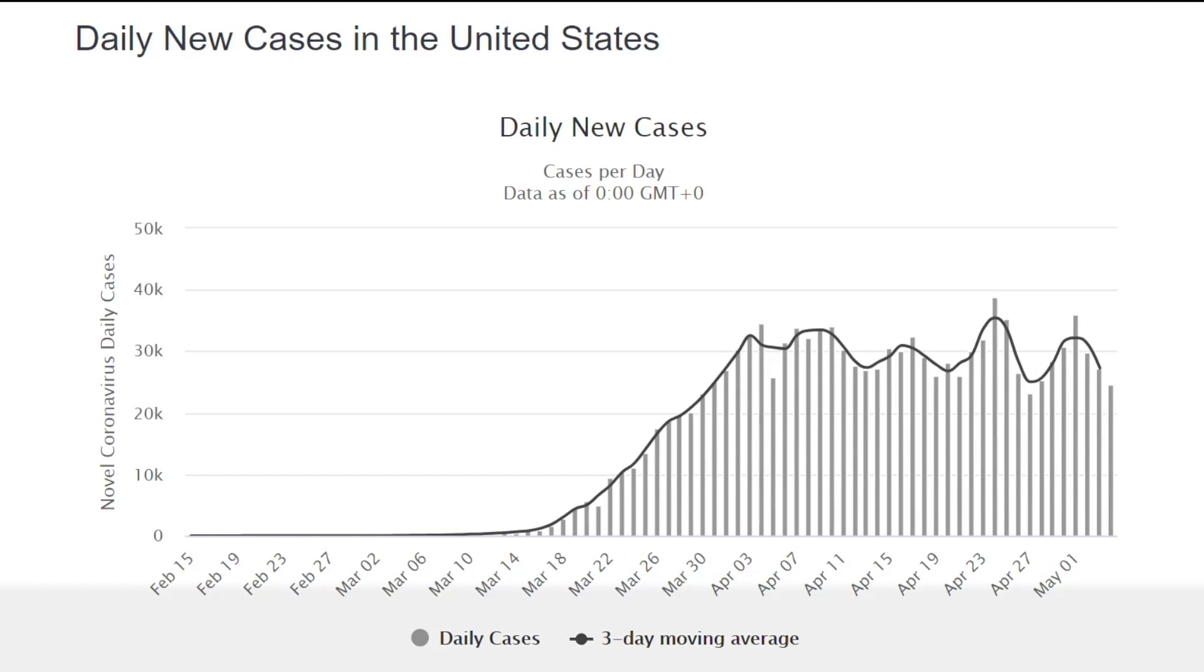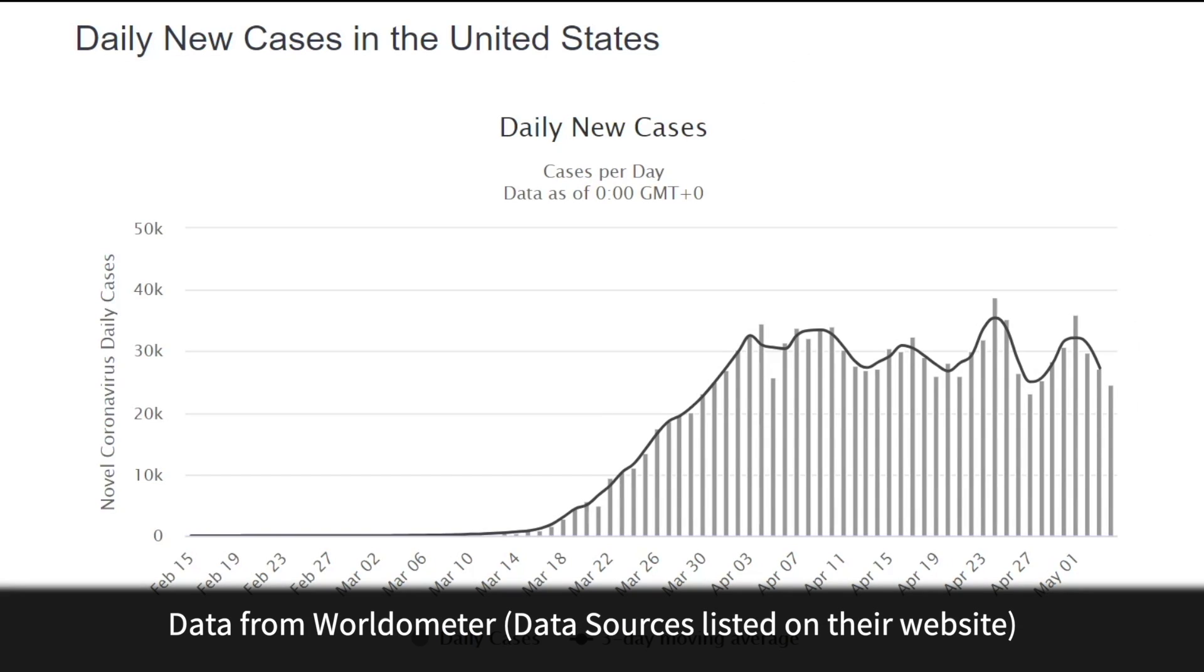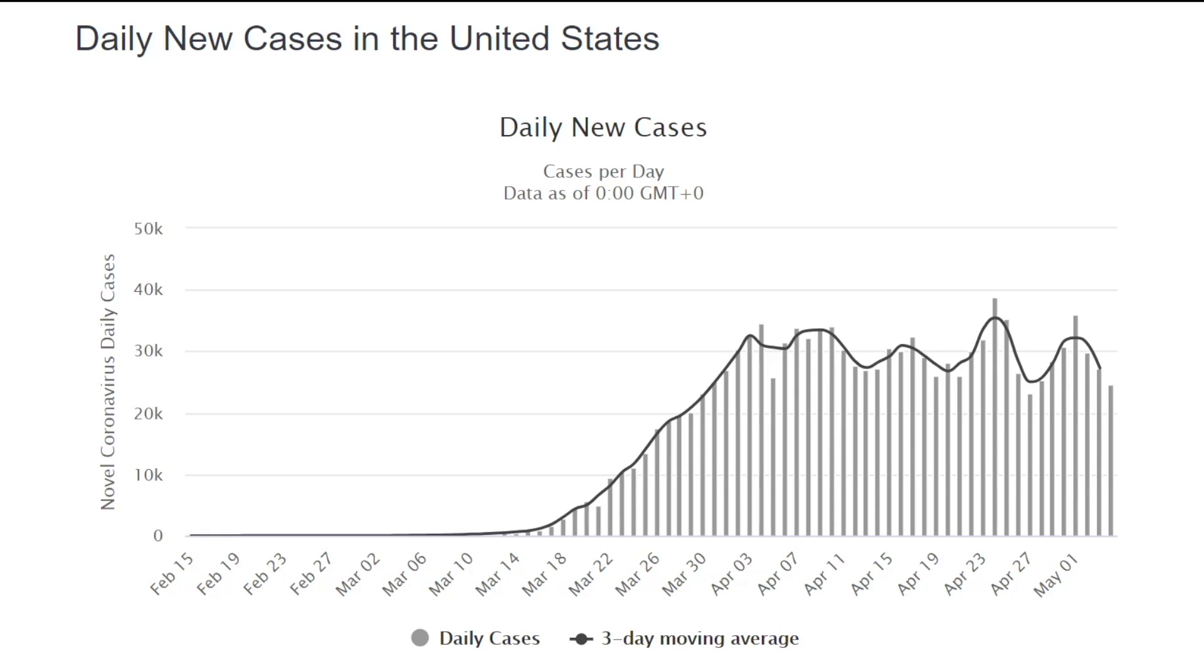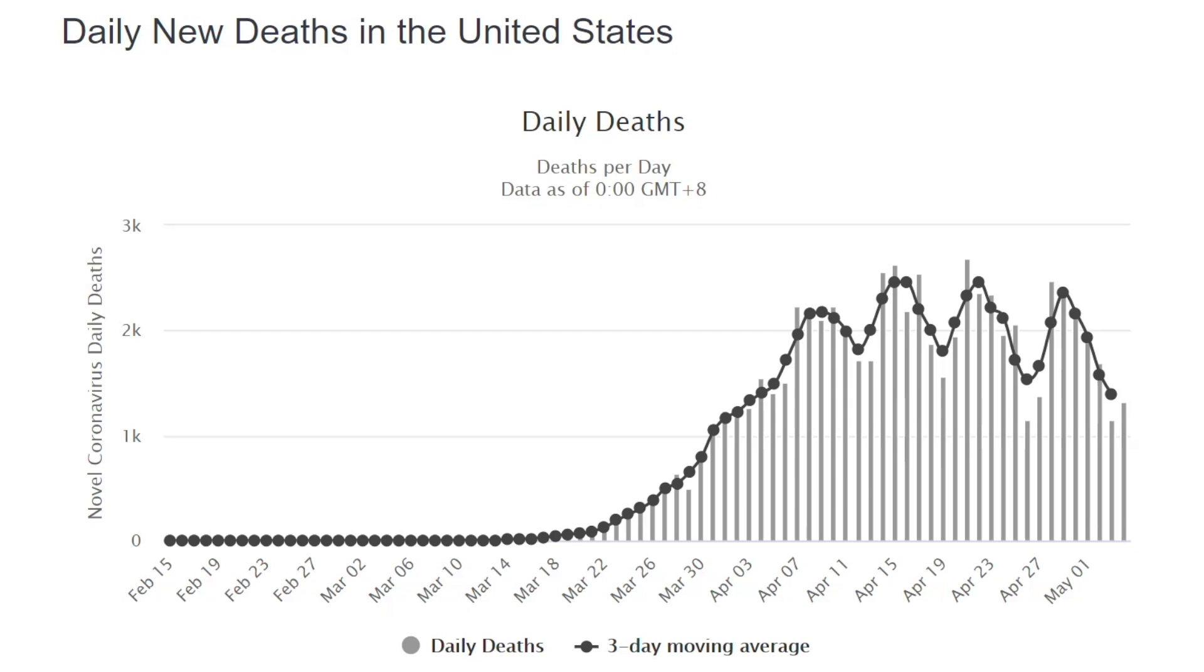Here are the daily new cases in the United States, and they seem to be taking an undulating appearance with a period of about seven days. Interestingly, the same pattern appears with daily deaths.